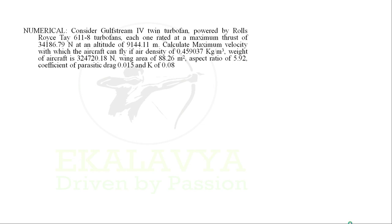Consider Gulfstream 4, a twin turbofan aircraft powered by Rolls-Royce T6118 turbofans, each rated at a maximum thrust of 34186.79 N at an altitude of 9144.11 m. Calculate the maximum velocity with which the aircraft can fly, given: air density of 0.459037 kg/m³, weight of 324720.18 N, wing area of 88.26 m², aspect ratio of 5.92, coefficient of parasitic drag CD0 = 0.015, and K = 0.08.